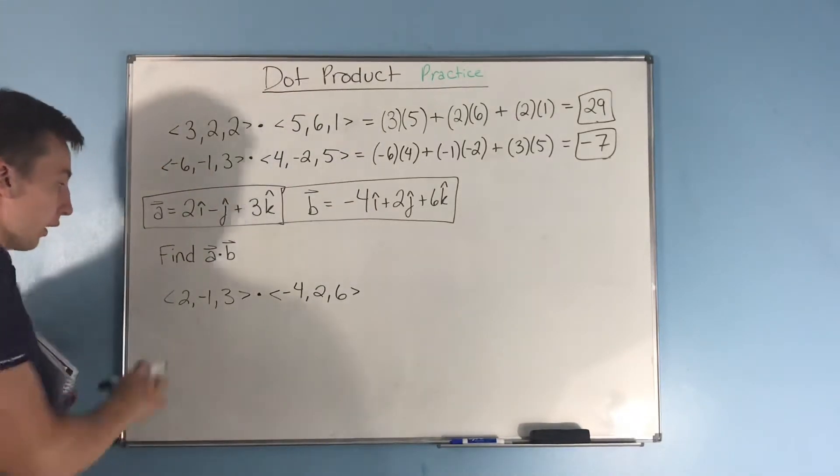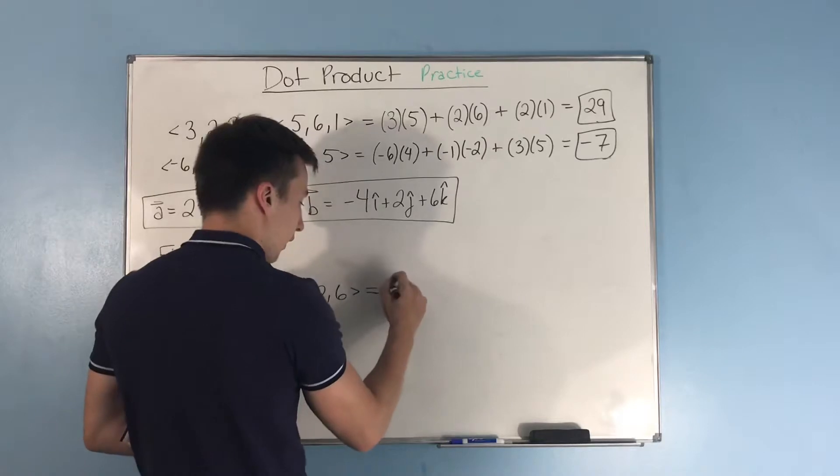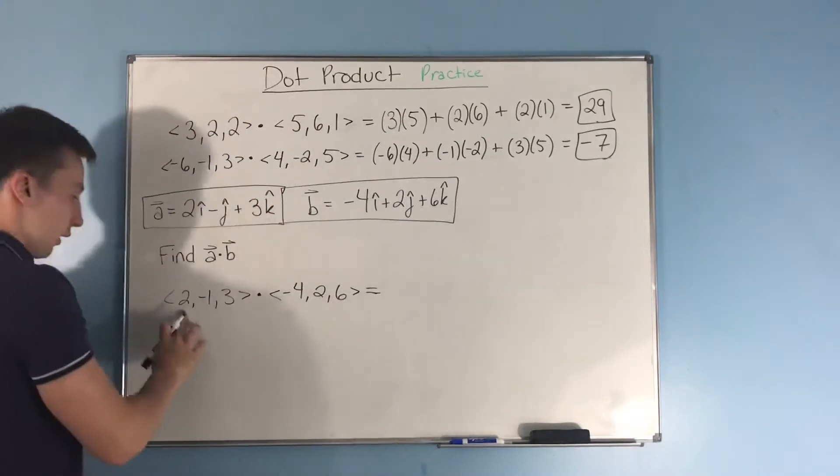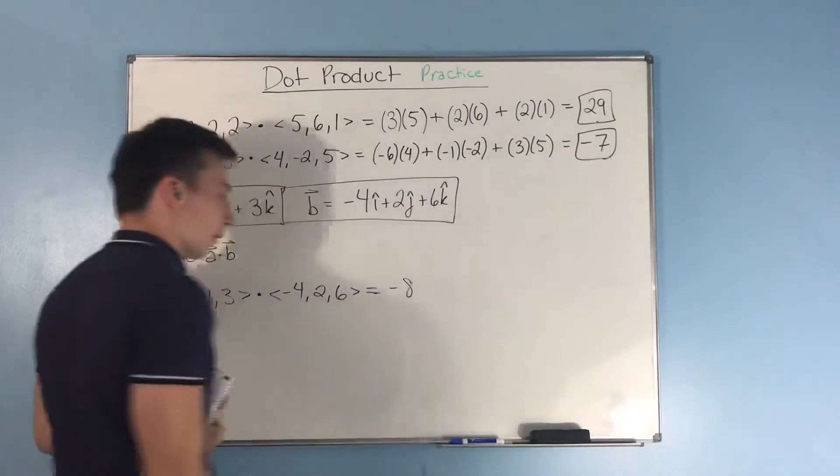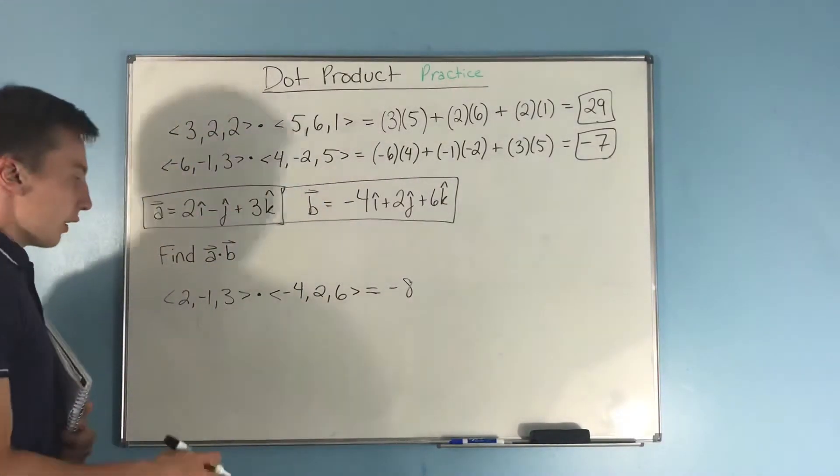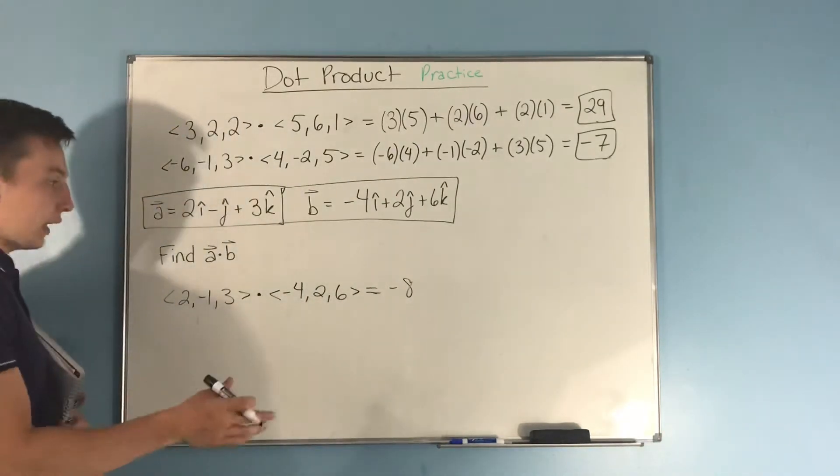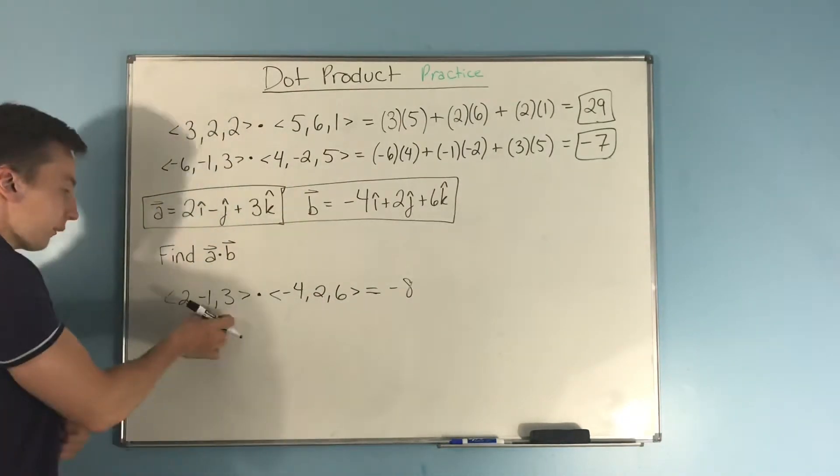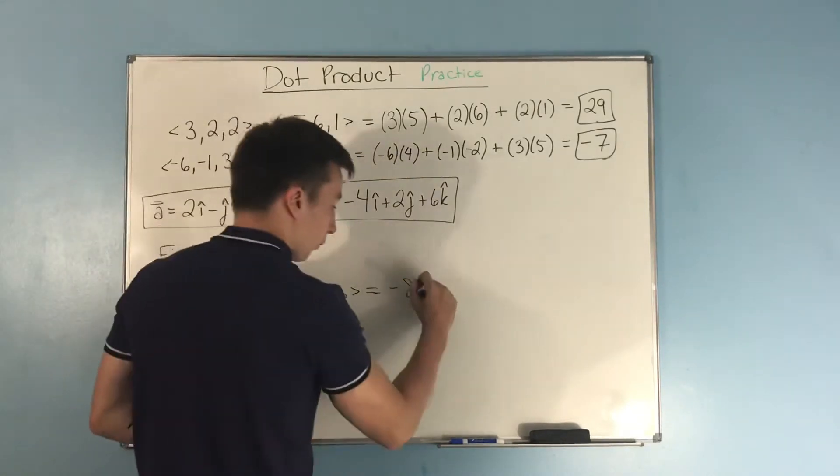So, going forward from there, we're going to multiply our first two set of components. That is going to be 2 and negative 4, which gives us negative 8. We'll do it a little bit faster this time. Next, we're going to multiply our second set of components, and we're going to add it to this negative 8. That'll be negative 1 times 2. That's negative 2. So, we're going to have minus 2.